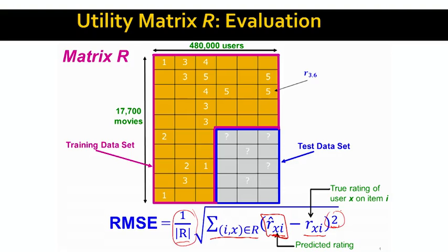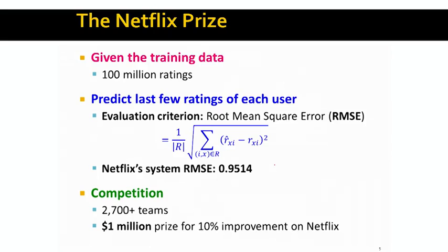In some sense, our goal is to complete this matrix R wherever the values for ratings are unknown, and our goal is to complete this matrix as accurately as possible — to predict how much a given user is going to like a given movie.